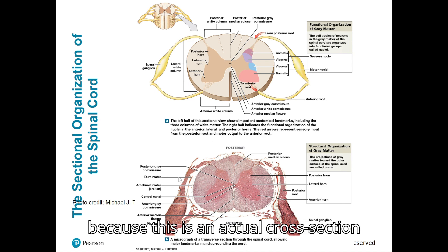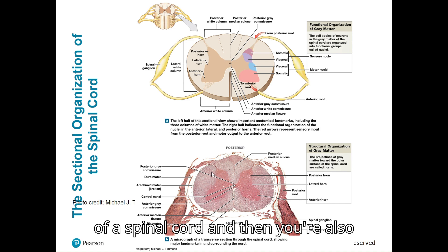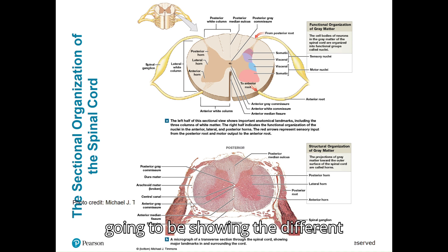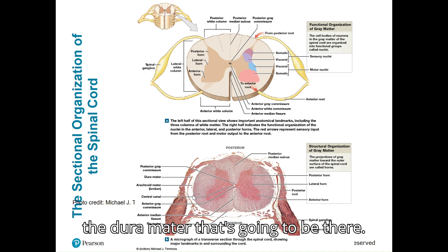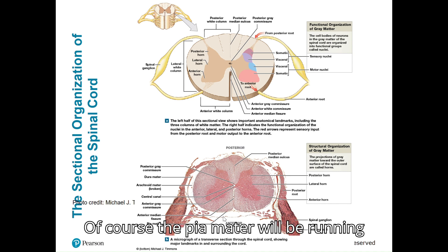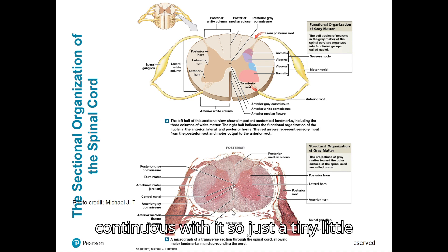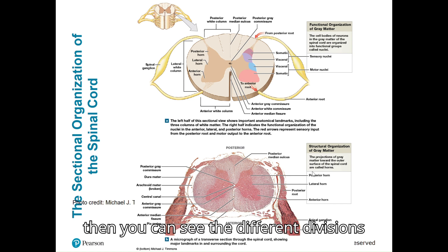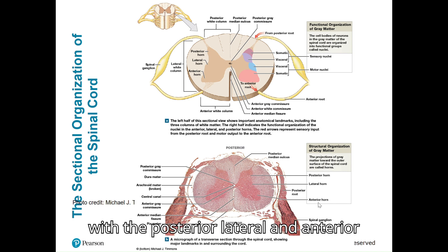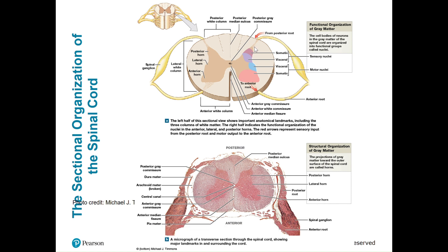Here is an actual cross-section of a spinal cord also showing the different meninges. You can see the dura mater there, and the pia mater running continuous with it — a tiny thin layer going around the cord. You can also see the different divisions with the posterior, lateral, and anterior horns of the gray matter.